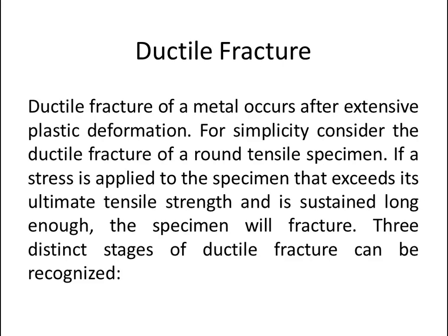Let's talk about ductile fracture. Ductile fracture of a metal occurs after extensive plastic deformation. For simplicity, consider the ductile fracture of a round tensile specimen. If a stress is applied to the specimen that exceeds its ultimate tensile strength and is sustained long enough, the specimen will fracture. Three distinct stages of ductile fracture can be recognized.